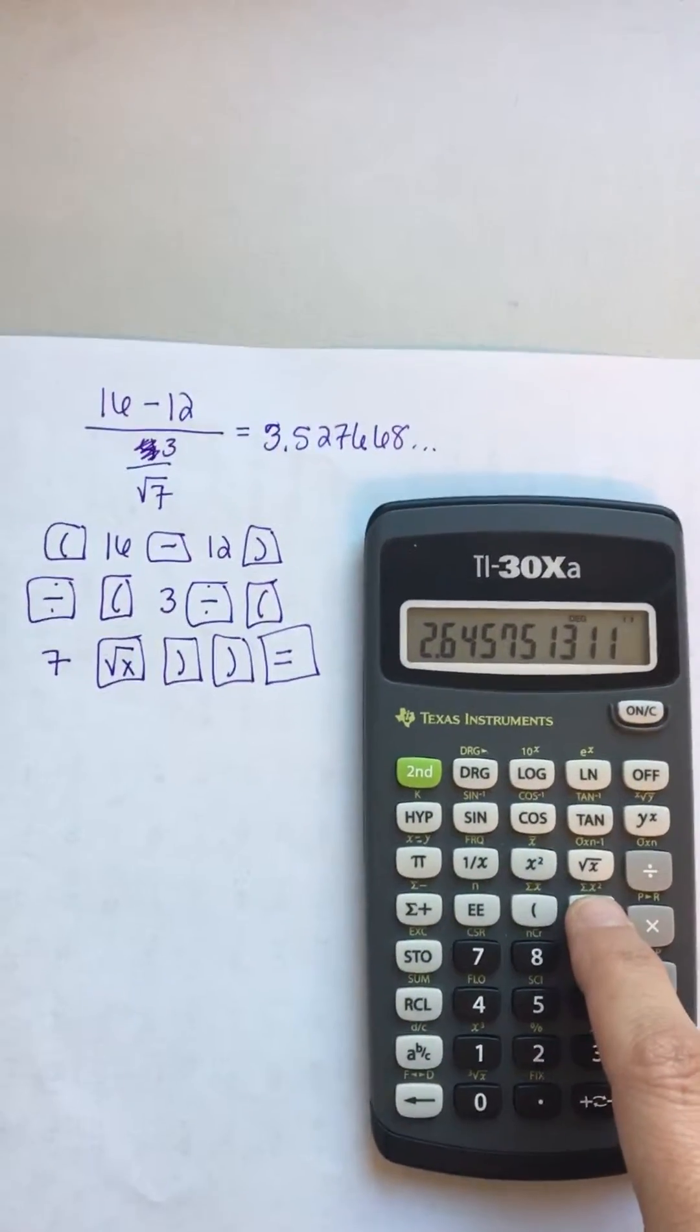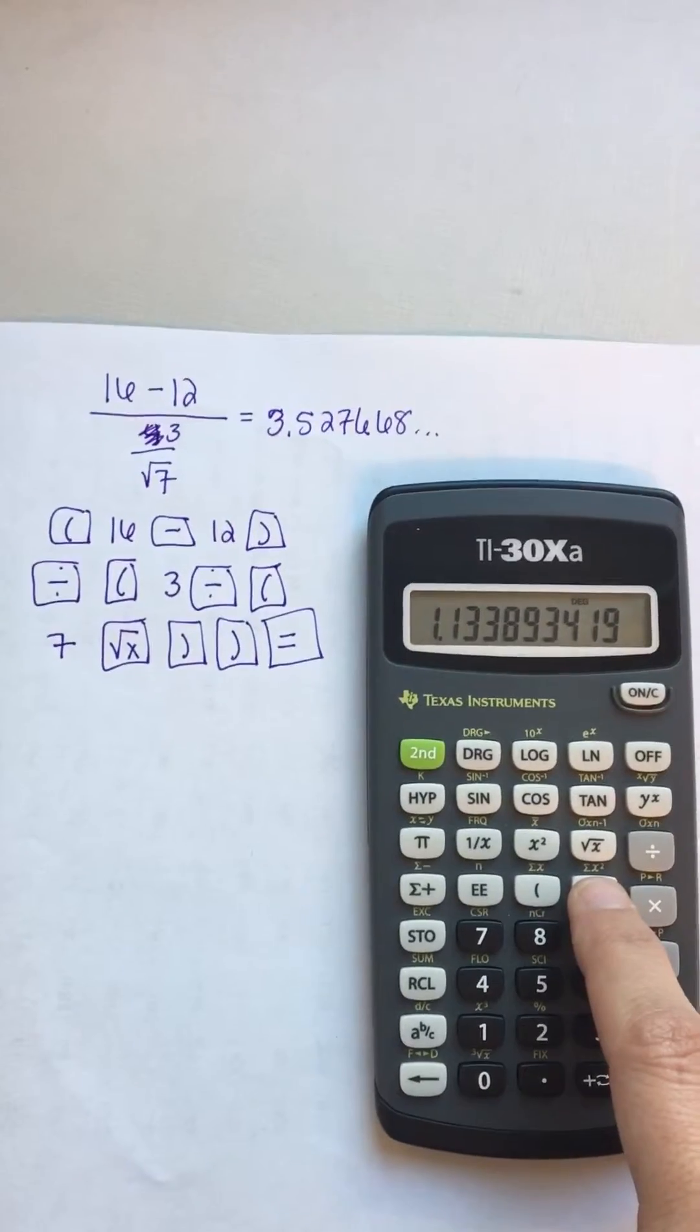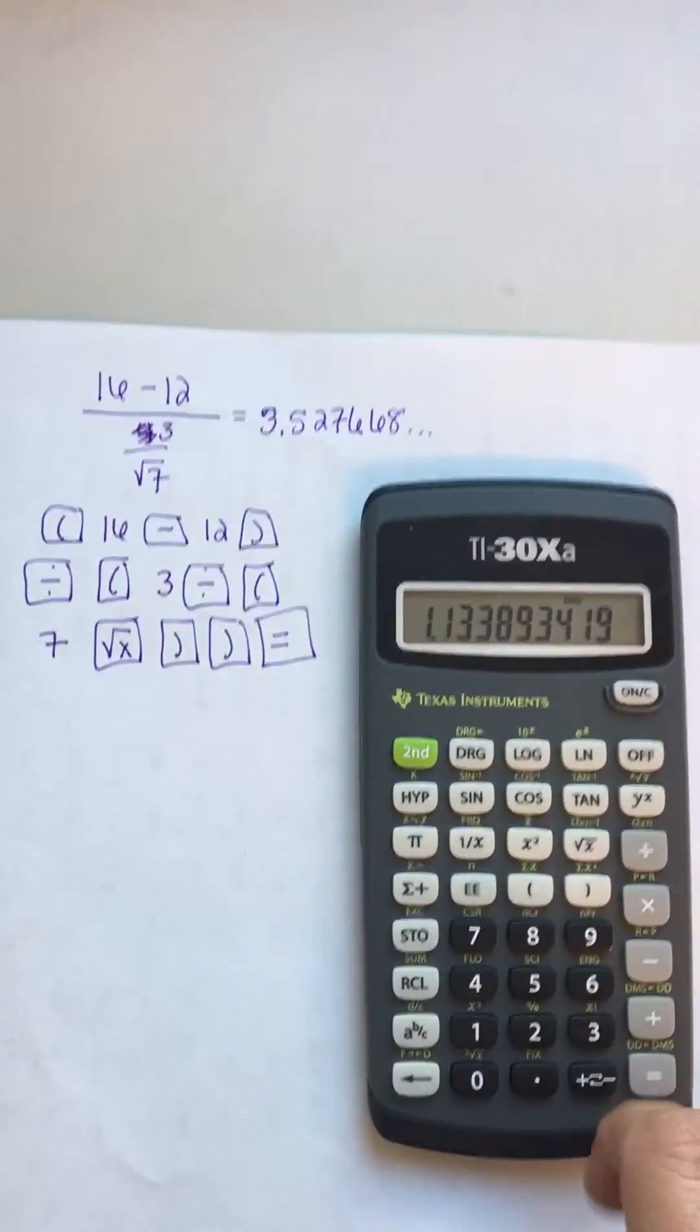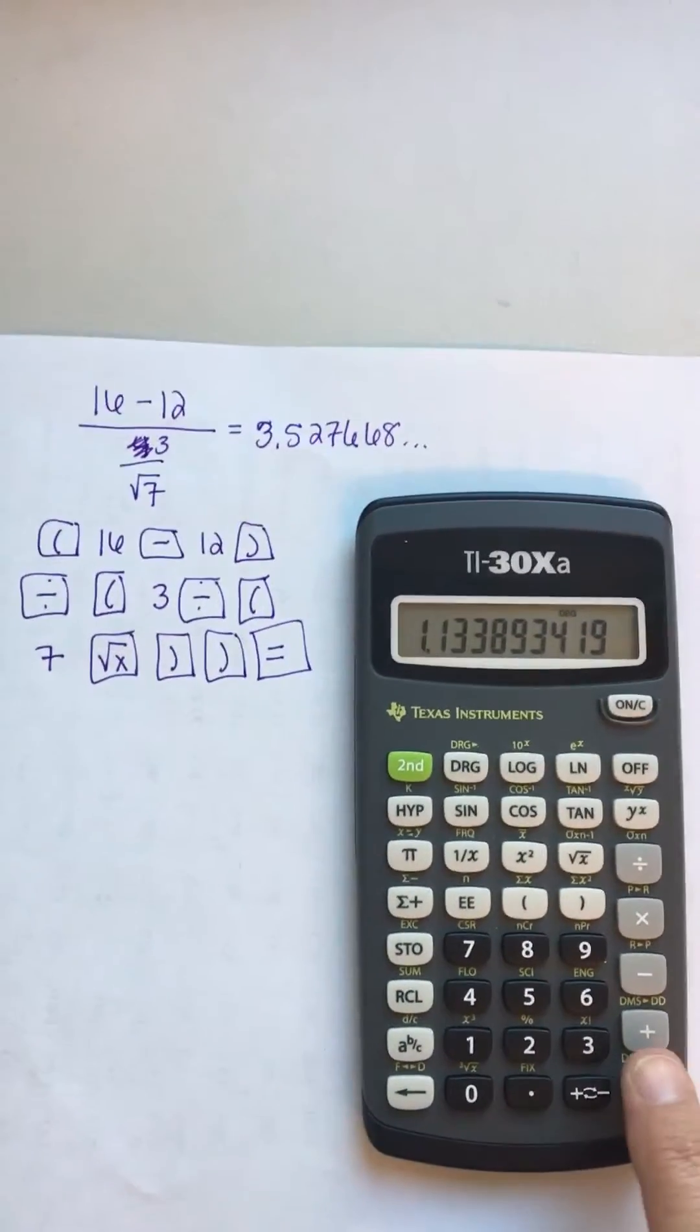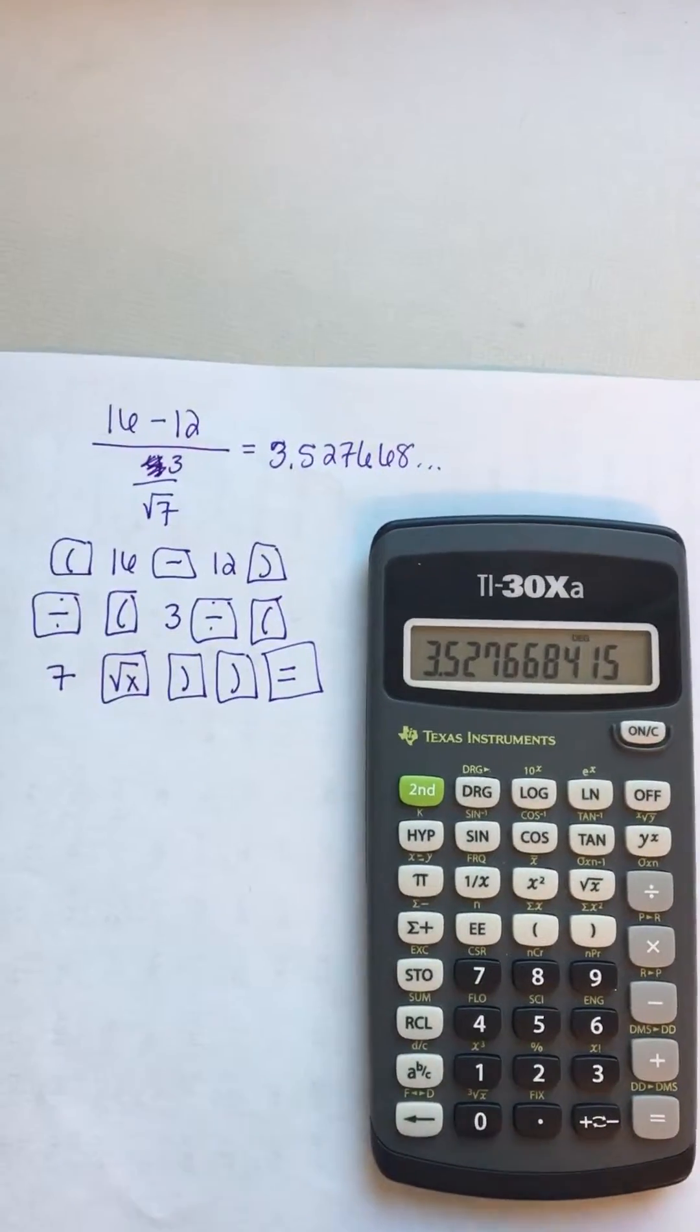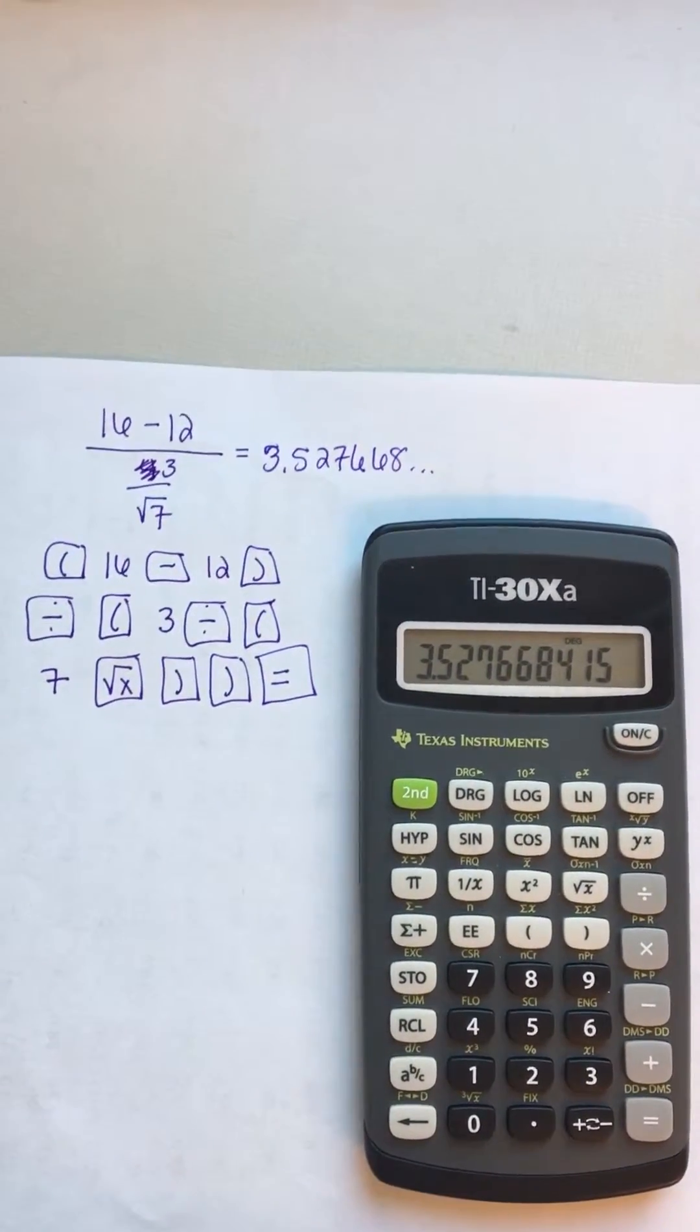Then I hit a second parenthesis to end the denominator, but that only tells me the amount on the denominator. It's not until I actually hit equals that I get the answer of 3.527.